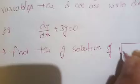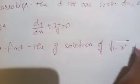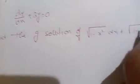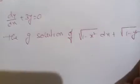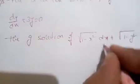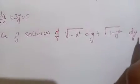First problem: find the general solution of √(1 - x²) dy + √(1 - y²) dx = 0.